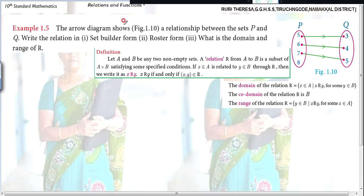The arrow diagram shows figure 1.10, a relationship between the sets P and Q. It shows the relationship R. Write the relation in set builder form, roster form, and identify the domain and range of R.